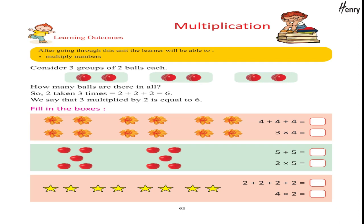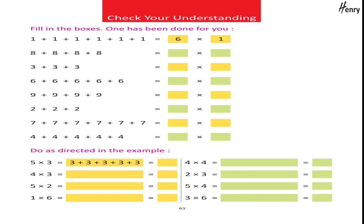Multiplication. Learning outcomes: after going through this unit, the learner will be able to multiply numbers. Consider 3 groups of 2 balls each — how many balls are there in all? 2 taken 3 times equals 2 plus 2 plus 2 equals 6. We say that 3 multiplied by 2 is equal to 6. Fill in the boxes. Check your understanding — fill in the boxes, one has been done for you. Do as directed in the example.